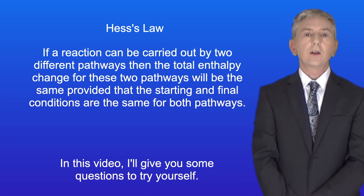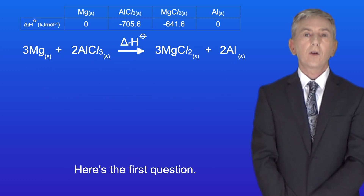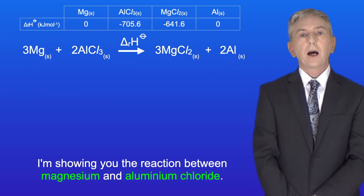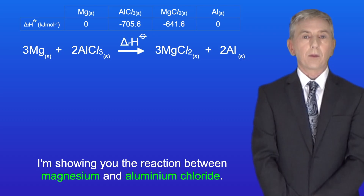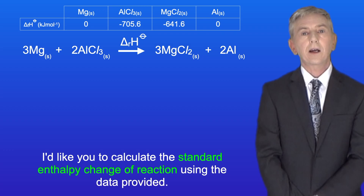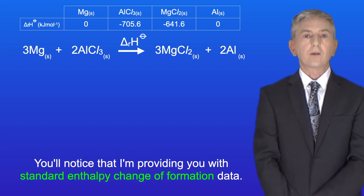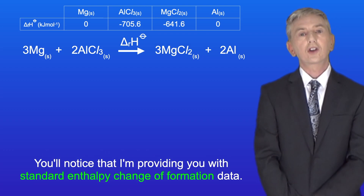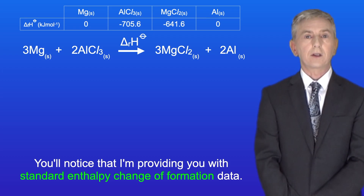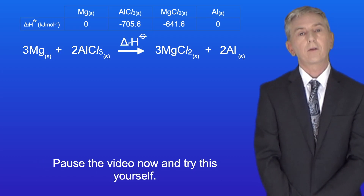In this video I'll give you some questions to try yourself. Here's the first question. I'm showing you the reaction between magnesium and aluminium chloride. I'd like you to calculate the standard enthalpy change of reaction using the data provided. You'll notice that I'm providing you with standard enthalpy change of formation data. So pause the video now and try this yourself.